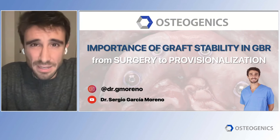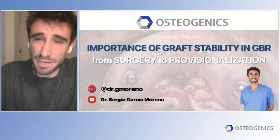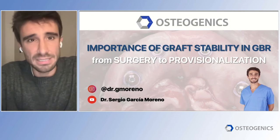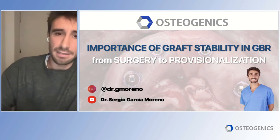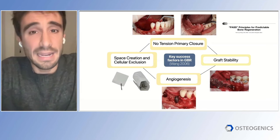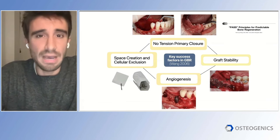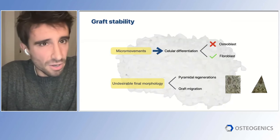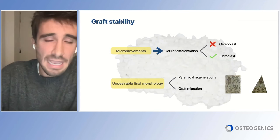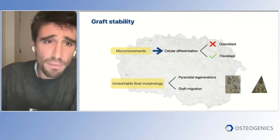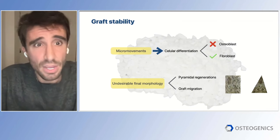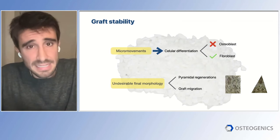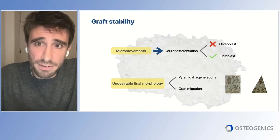Thanks to Osteogenics for the invitation to talk about guided bone regeneration. Today, within this huge topic, we are going to talk about the importance of graft stability inside guided bone regeneration. As you all know, graft stability is one of the key factors for predictable results and success in GBR. If we don't have enough graft stability during the healing time, there are going to be micro movements inside the grafted area, and these micro movements will affect the cellular differentiation of mesenchymal cells.